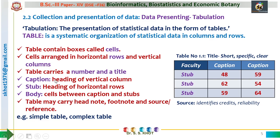Captions are the headings of vertical columns — the first cell of each column carries some text called a caption. The heading of a row is called a stub — stubs are the leftmost cells of each row. The cells present between the caption and stub are called the body of the table. The table may also carry additional information in the form of a headnote, footnote, or source reference.